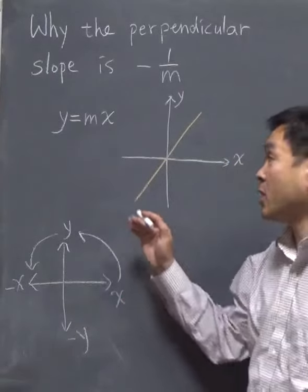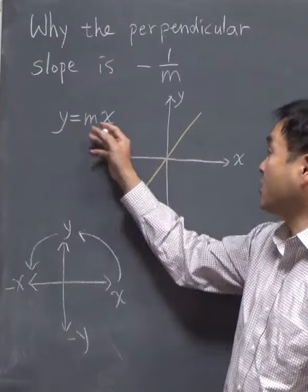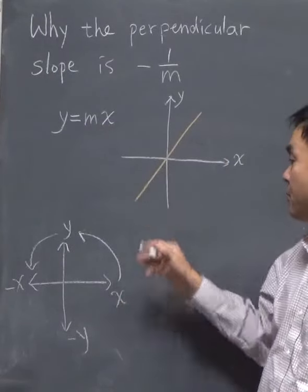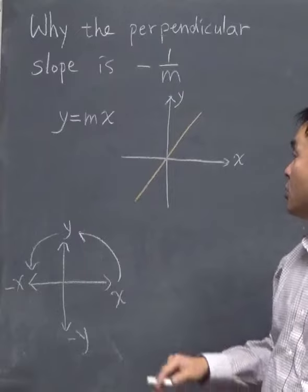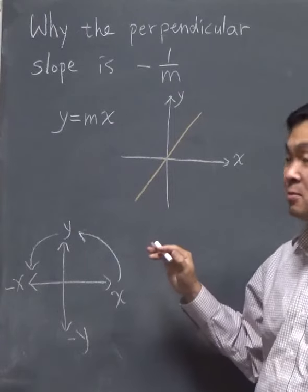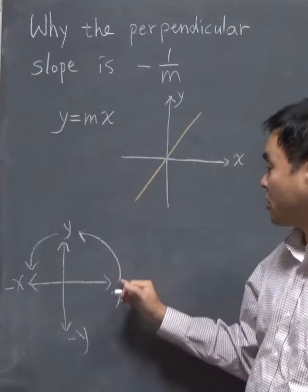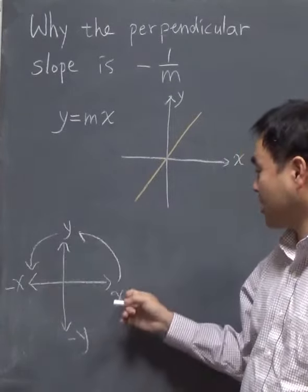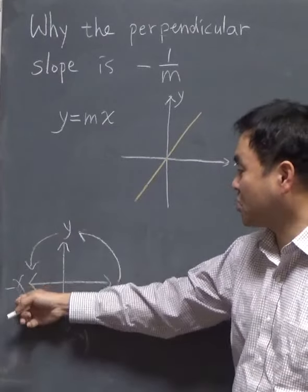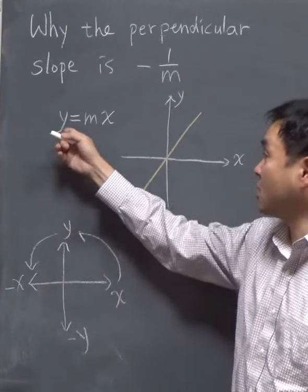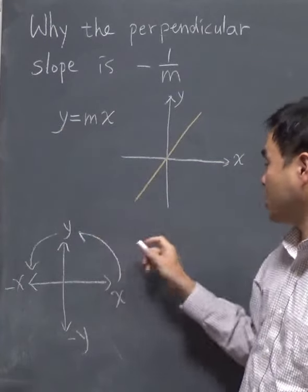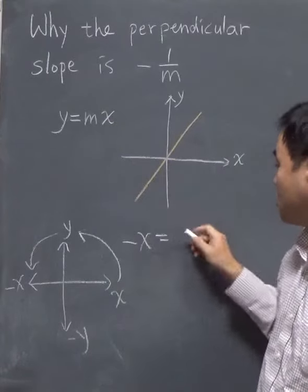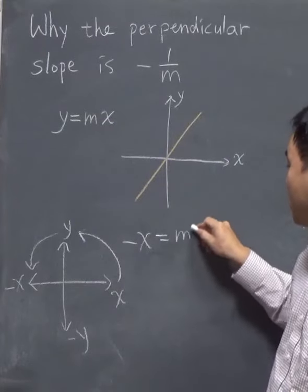Say you have the line y equals mx, so that the slope is m. Now you want to get the perpendicular line by rotating 90 degrees this way, so that x becomes y and y becomes negative x. That means this y is replaced by negative x and this x is replaced by y.